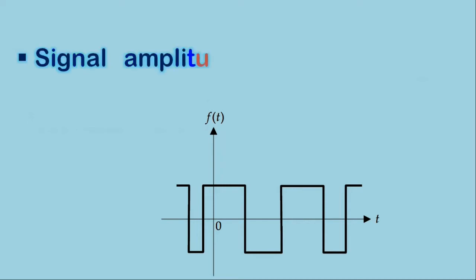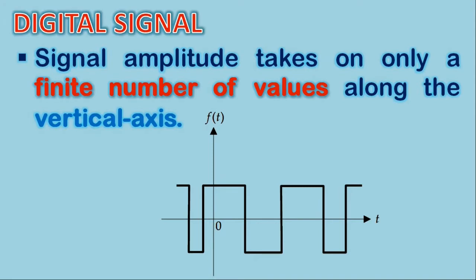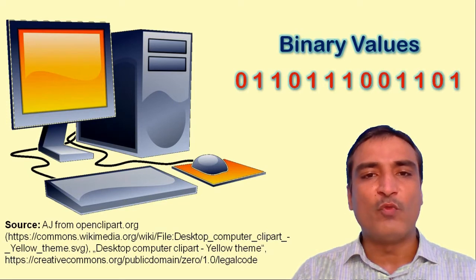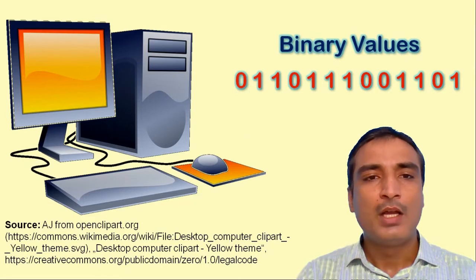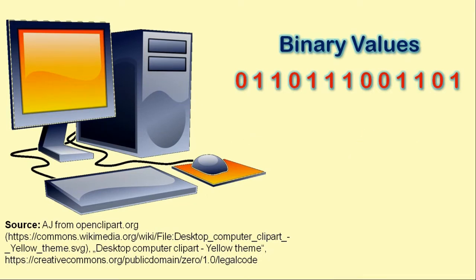Now look at this illustration. You may observe that the signal amplitude is taking on only a finite number of values along the vertical axis. A signal whose amplitude can take on only a finite number of values along the vertical axis is known as a digital signal. Another example of a digital signal is the signal interacting in a digital computer, whose amplitude takes on only two binary values — 0 and 1. However, it is worth mentioning that in order to qualify a signal as a digital one, the number of values which the signal amplitude takes on need not be restricted to 2; it can be any number, but finite.